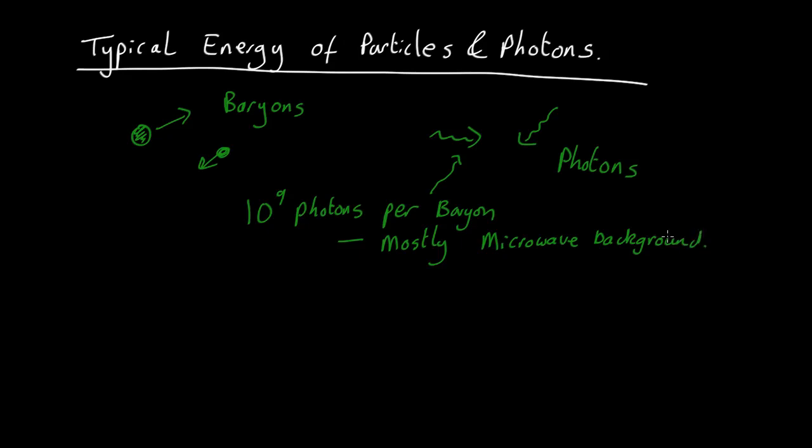Now what are the energies of these baryons and these photons? Well, today they have different energies. But when the universe was very young, less than a few hundred thousand years old, it was so dense that the photons and baryons were constantly smashing into one another, and this situation is what we call equipartition. If there are enough constant collisions between them, they will on average have the same energy, which makes things very easy.